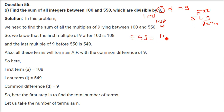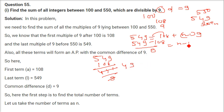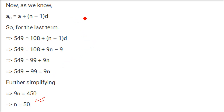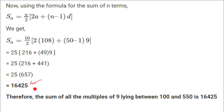We solve: 549 = 108 + (N−1)×9, so (549 − 108) ÷ 9 = N − 1, giving 441 ÷ 9 = 49, so N − 1 = 49 and N = 50. The sum SN = (50/2) × [2×108 + (50−1)×9] = 25 × [216 + 49×9]. Solving gives 16425.